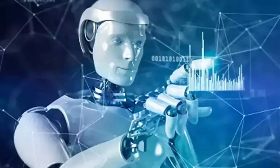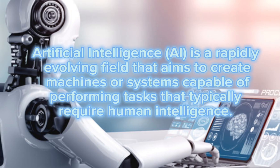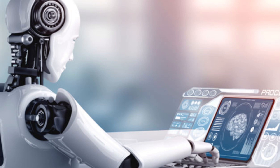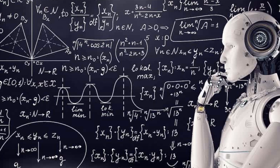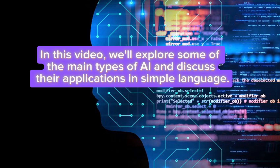15 Types of Artificial Intelligence. AI is a rapidly evolving field that aims to create machines or systems capable of performing tasks that typically require human intelligence. Over the years, AI has been classified into various types based on their capabilities and functionalities. In this video, we'll explore some of the main types of AI and discuss their applications in simple language.